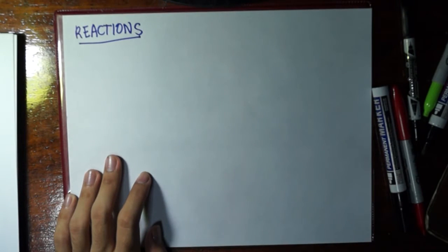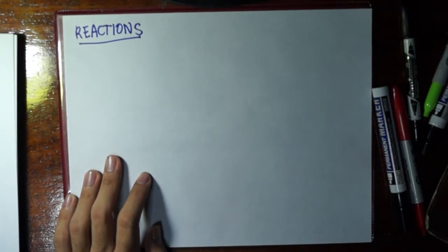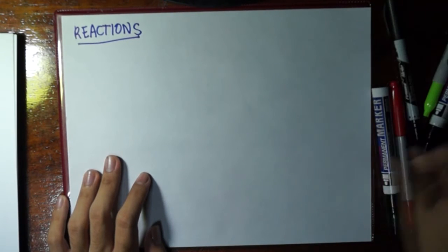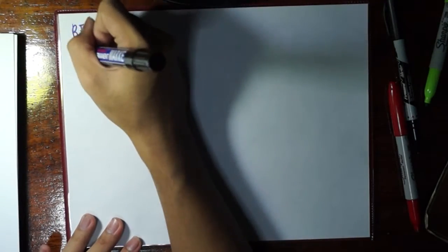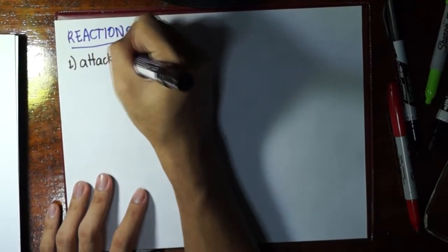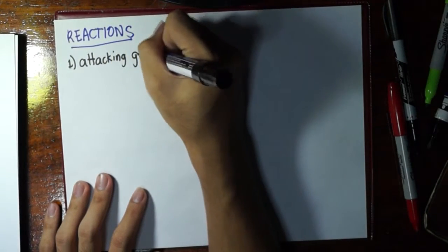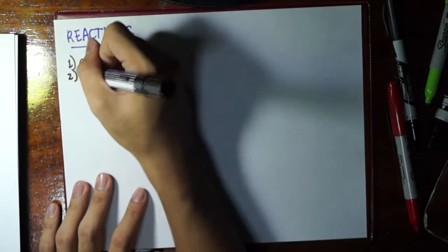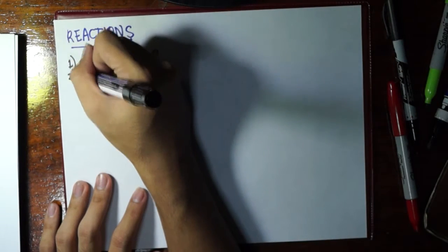So in a certain organic reaction, we should be able to see that there are two things that we look at. Let me find first a working black marker. So first we look at the attacking group, which we will define right after the second one is written.